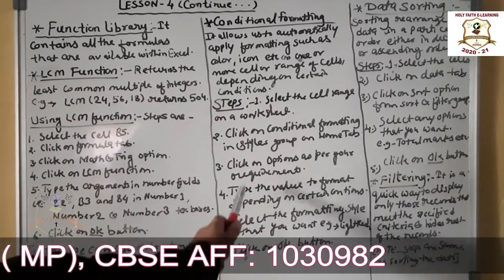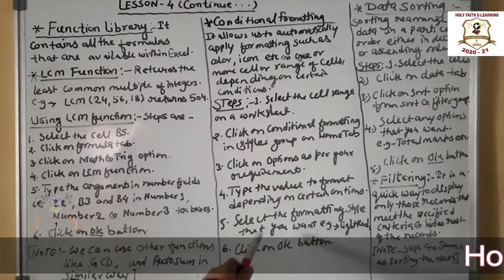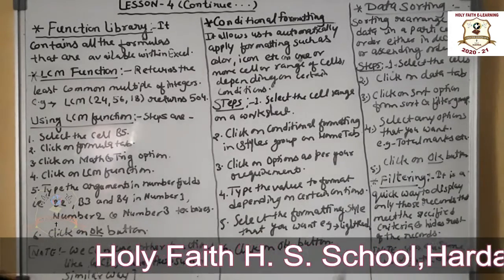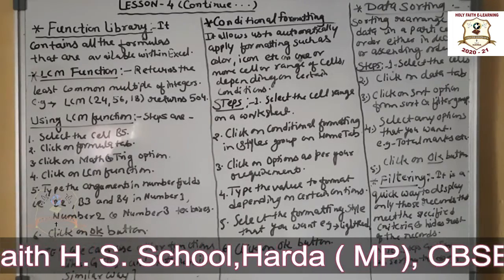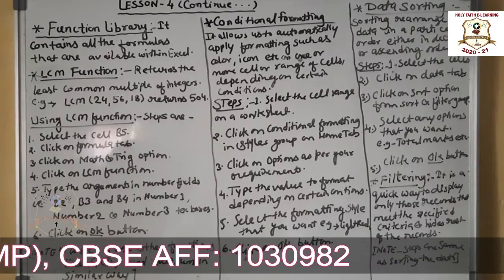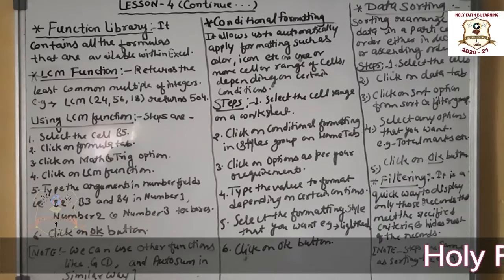Type the values of format depending on the certain conditions. Select the formatting style that you want to apply, like light red color or something else. Formatting means to arrange or decorate our Excel sheet. Click on the OK button. By this you can apply conditional formatting on your Excel sheet.